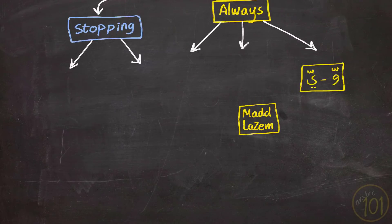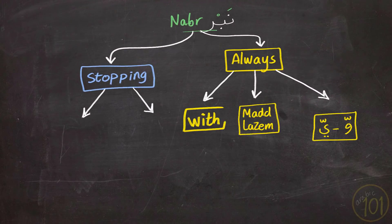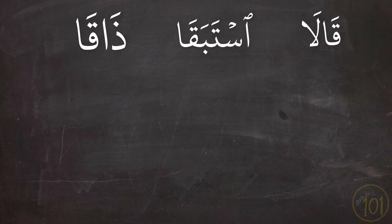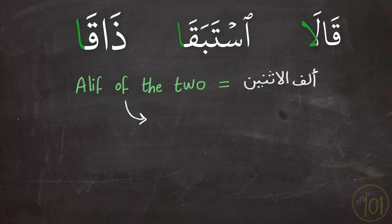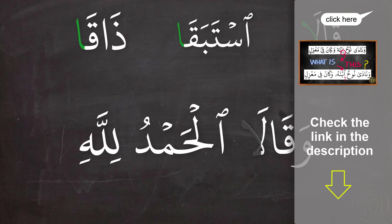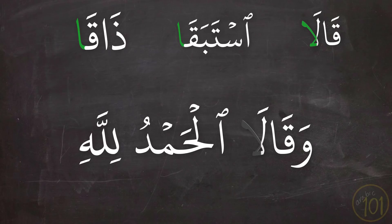The third case when we apply stress is with the words قَالَا إِسْتَبَقَا ذَاقَا. These three words end with an Alif. We call this Alif the Alif of the two, or in Arabic Alif Al-Ithnain, which indicates that this verb is done by two people. And in certain situations, in case of التقاء الساكنين, this Alif cannot be pronounced. I elaborated much more on this topic in this lesson. So check it out right now if you want to understand this point even better.